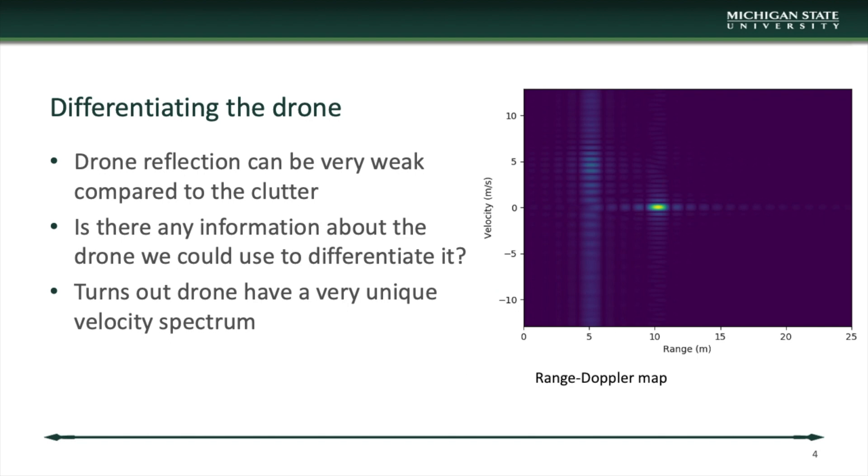But is it that simple? Unfortunately no. Radar returns from a drone can be very weak compared to the surrounding environment. We found out that drones have a very unique velocity response due to their rotating blades. By tracking the phase information along different pulses, we see that the strong static reflector has velocity equal to zero but the drone has a spread velocity response due to the rotating movement of blades. This is the information that we will use to differentiate the drone.